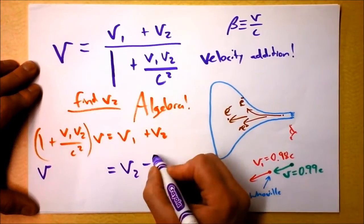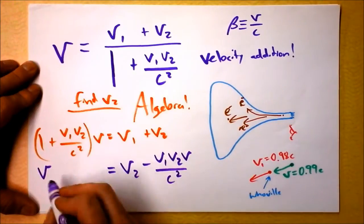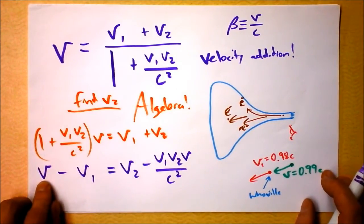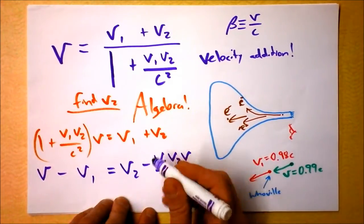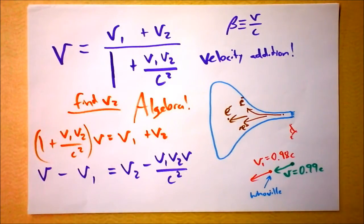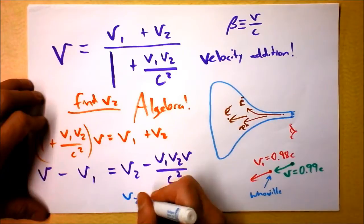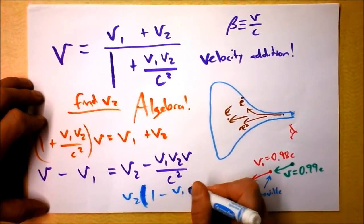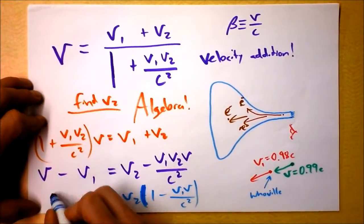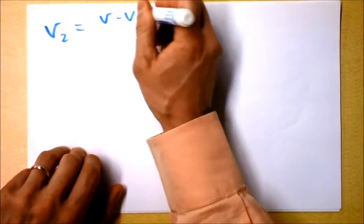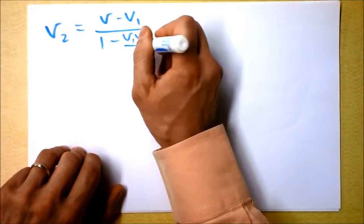I have V2 minus V1·V2·V over C squared on one side, then subtract V1. Each of these terms has units of velocity, so we're consistent — meters per second all around. Factoring out a V2: V2 times (1 minus V1·V over C squared) equals V minus V1. So V2 equals (V minus V1) divided by (1 minus V1·V over C squared). Compare this to the velocity addition equation: V equals (V1 plus V2) over (1 plus V1·V2 over C squared). This one uses subtraction rather than addition.